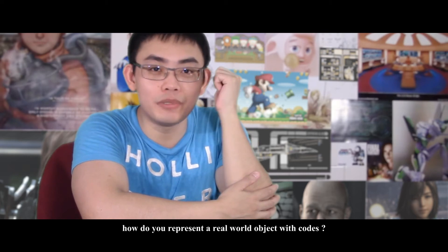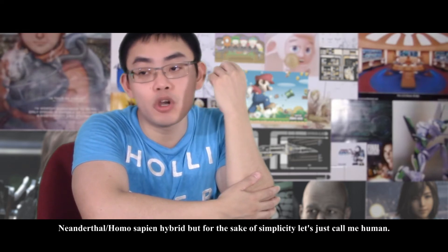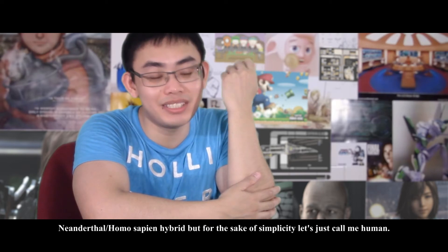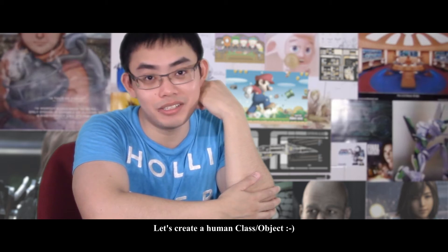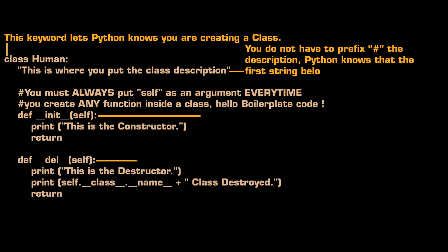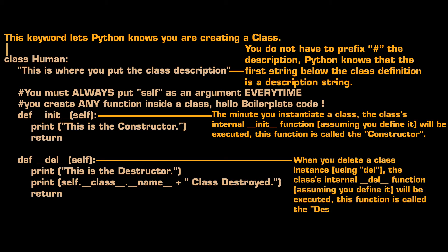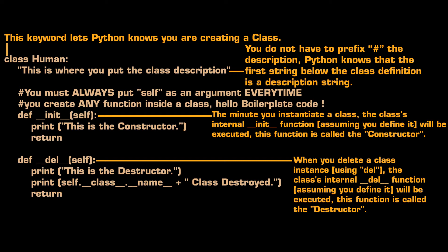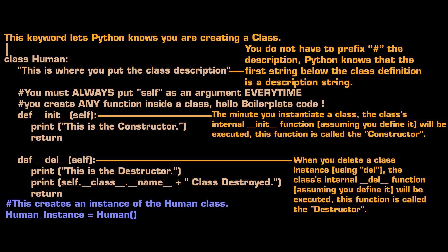So, how do you represent a real-world object with code? Let's use me as an example. I'm a Neanderthal-slash-Homo-Sapien hybrid, but for the sake of simplicity, let's just call me a human. Let's create a human class slash object. This is the basic structure of a class, and this is how you create an instance of a class. Go ahead, type this in, and see what happens.